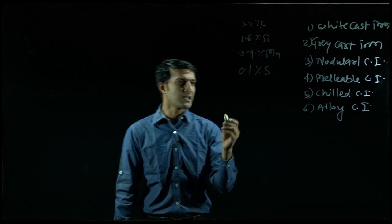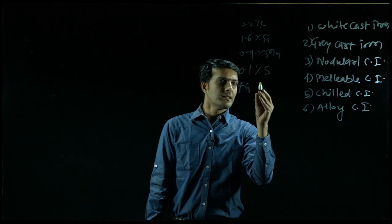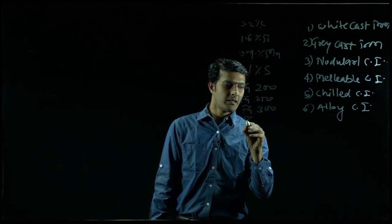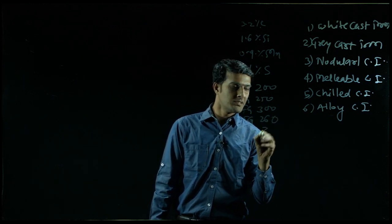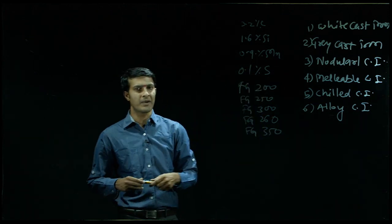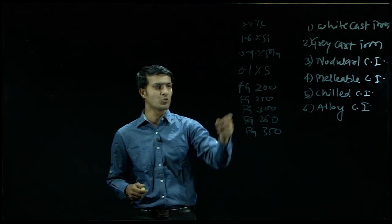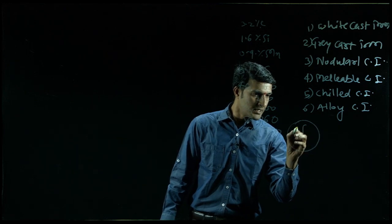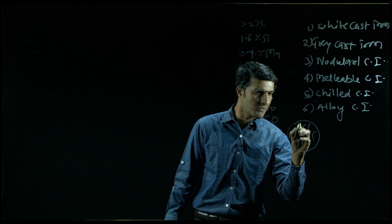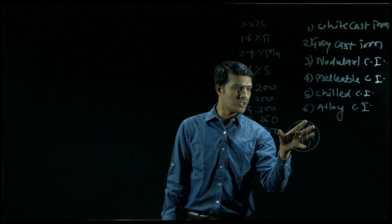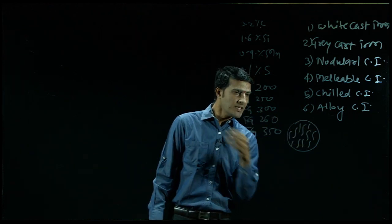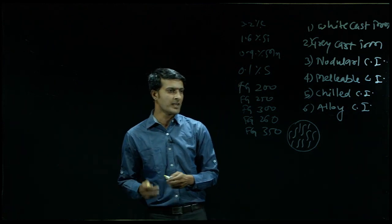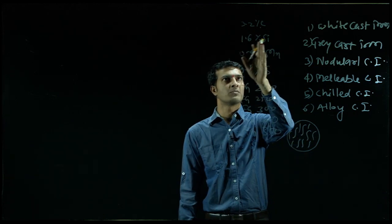Gray cast irons as per standards are classified as Fg 200, Fg 250, Fg 300, Fg 260, Fg 350. Here 'Fg' suggests flake graphites, which are the free graphites present in gray cast iron, and the number 200 suggests tensile strength in Newton per mm square. This free graphite, which looks like flakes in the microstructure of gray cast iron, is totally responsible for the machining properties. The formation of these flakes depends upon the amount of carbon and silicon present; gray cast iron normally has carbon ranging from 3.2 to 3.8 percent.